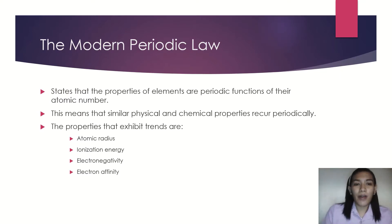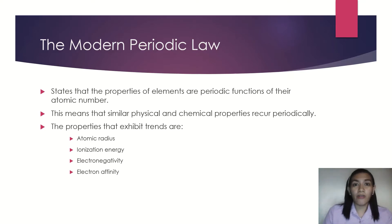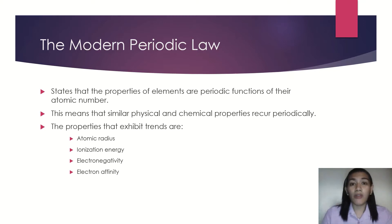The modern periodic law states that the properties of elements are periodic functions of their atomic number. When we say periodic, it refers to appearing or occurring at intervals. This means that similar physical and chemical properties actually occur or recur periodically — they repeat and can be observed at different intervals.